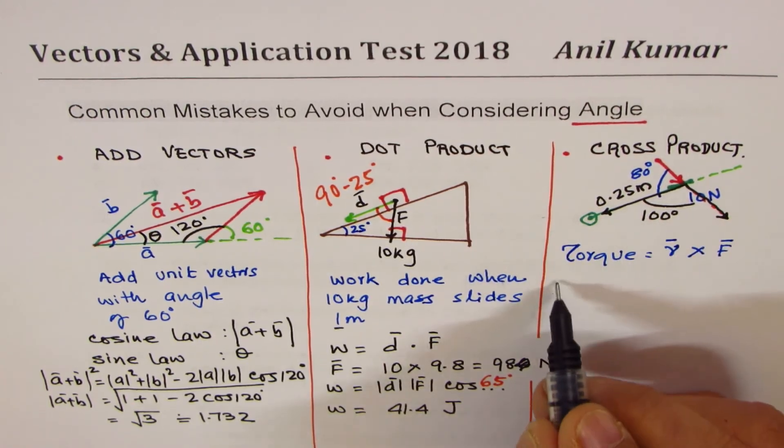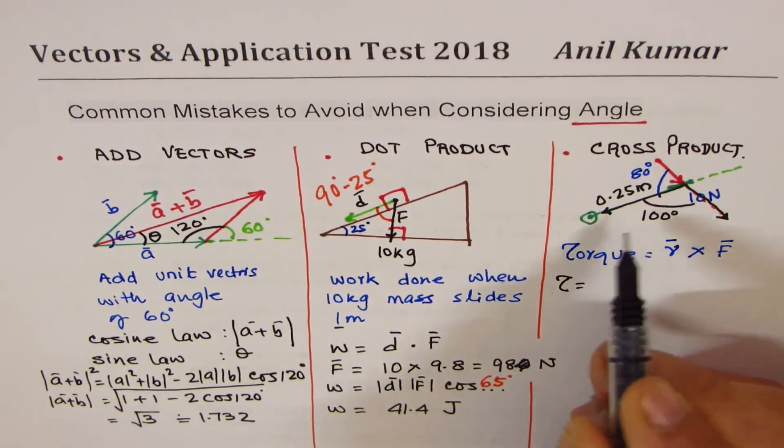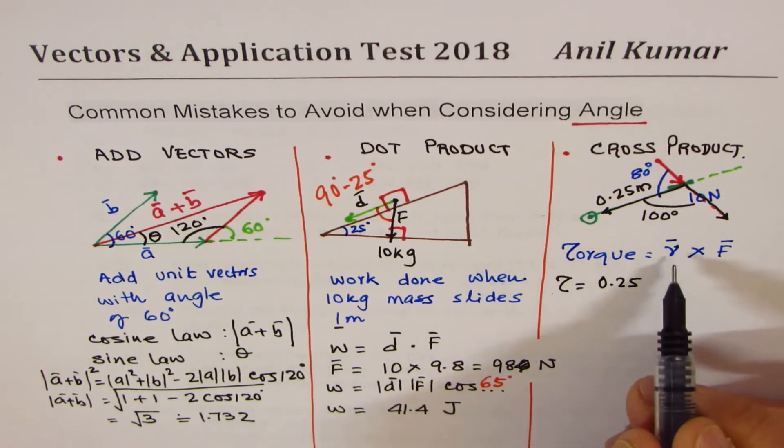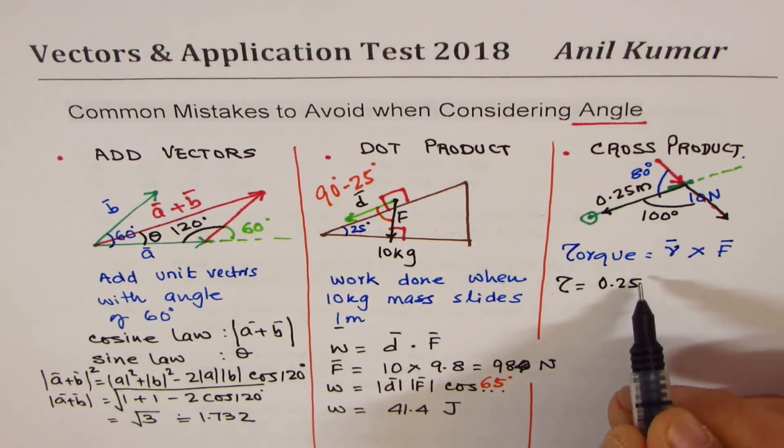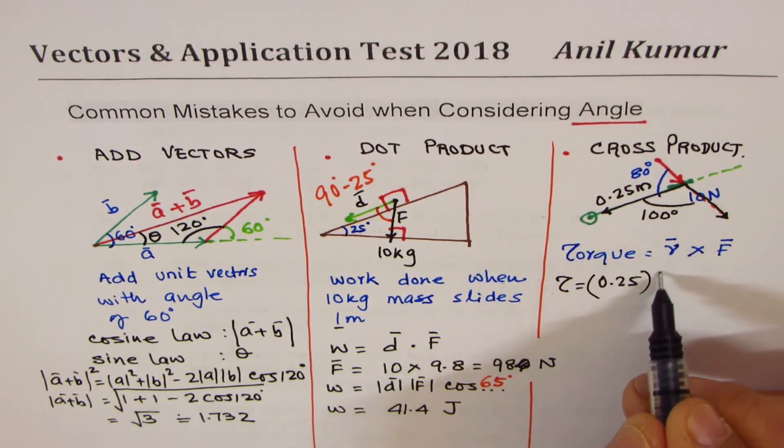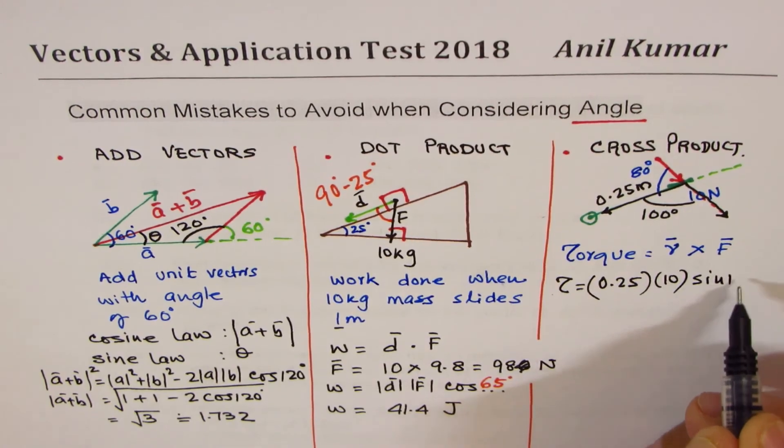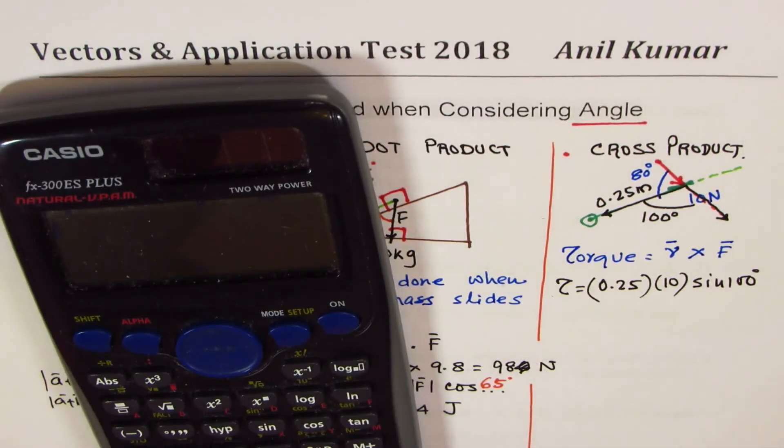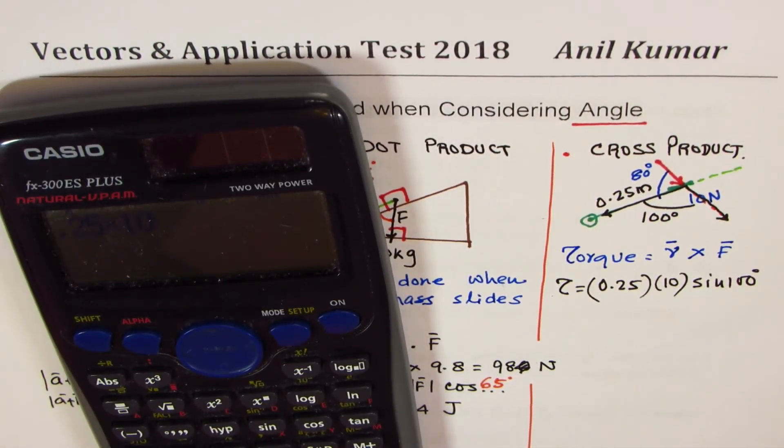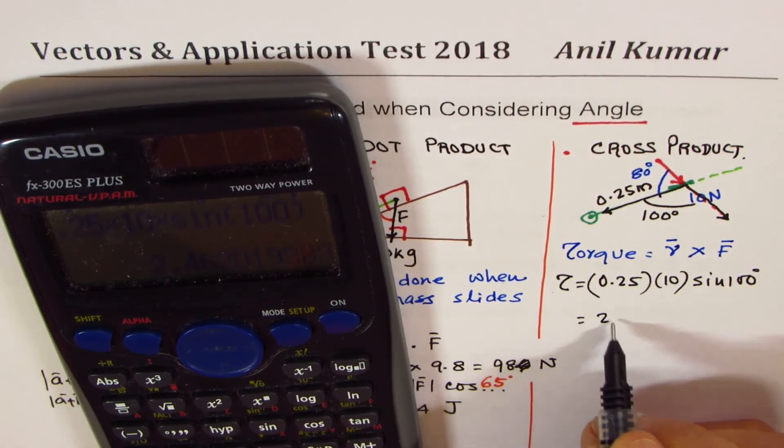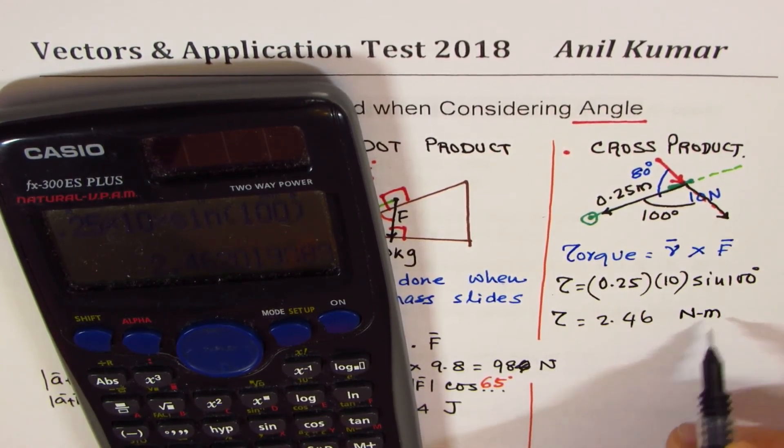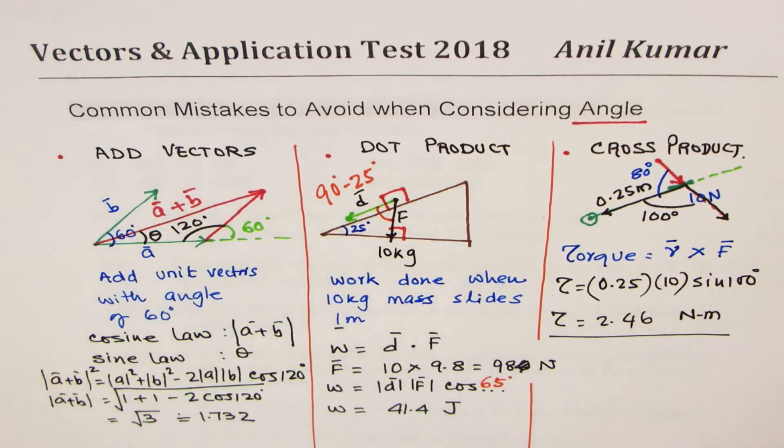And therefore, what we get here is that the torque is equal to 0.25, that's the magnitude given to us. The formula is cross product, that would be sine of that angle, times the force of 10 newtons, times sine of 100 degrees. Do you understand? Now, we have to multiply all this, so 0.25 times 10, times sine of 100 degrees. And that gives you the answer as 2.46 newton meters as your solution. Do you see that?